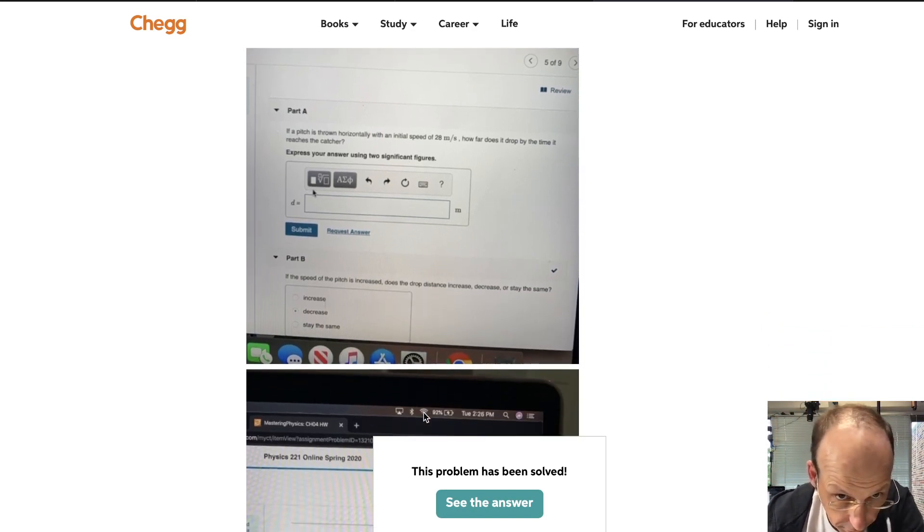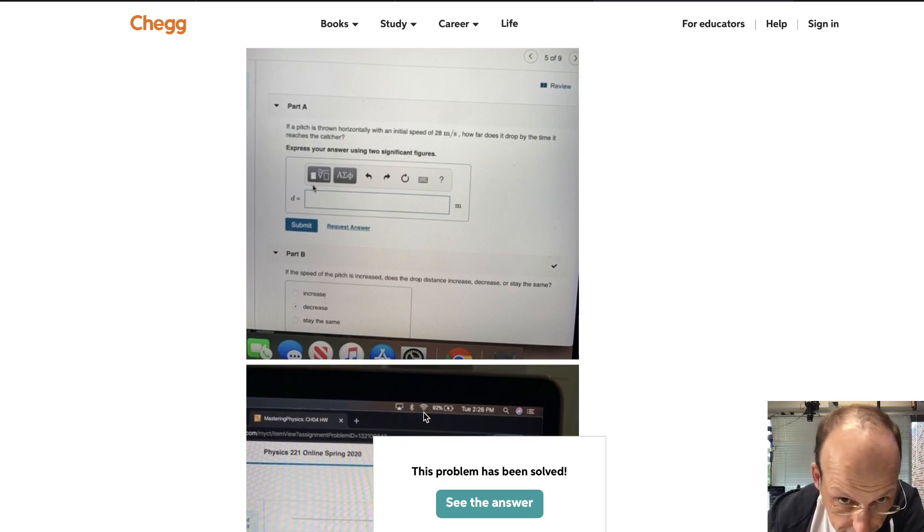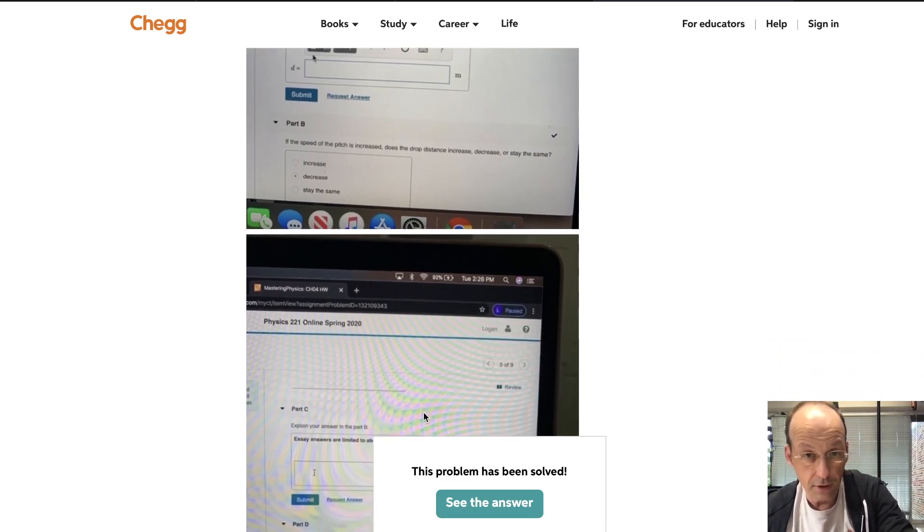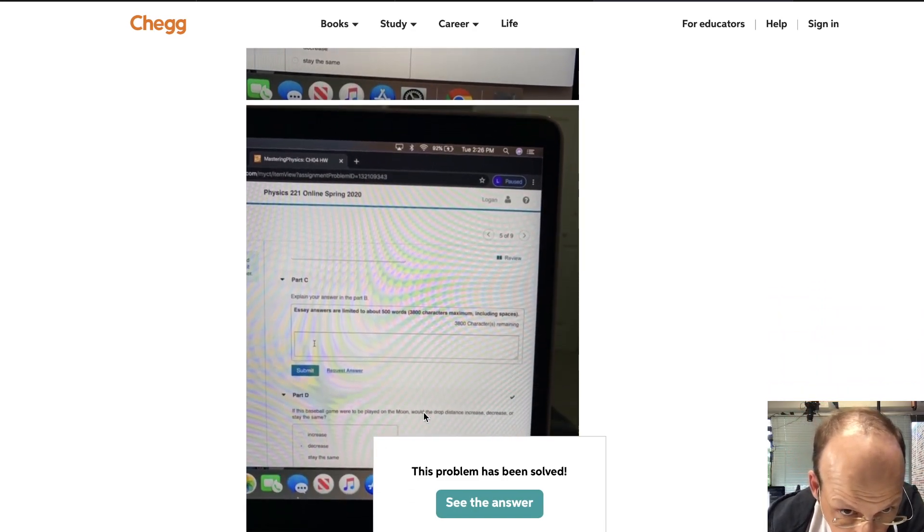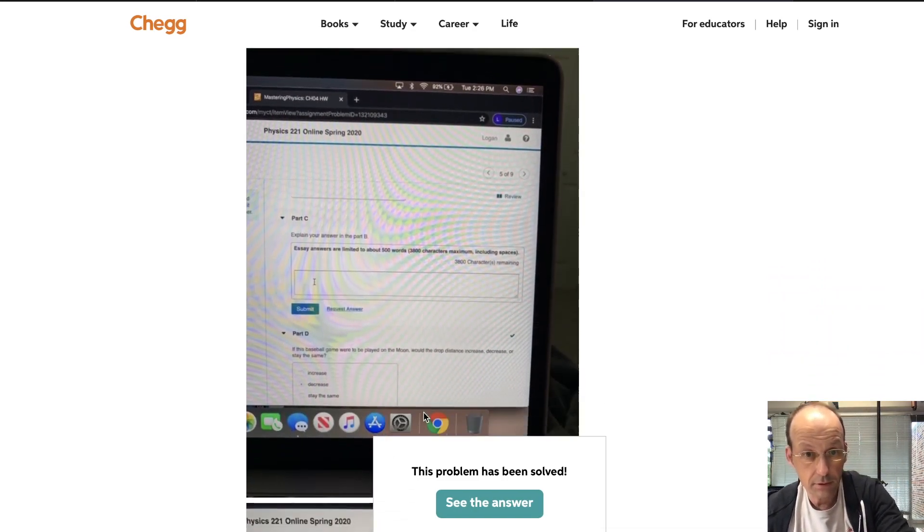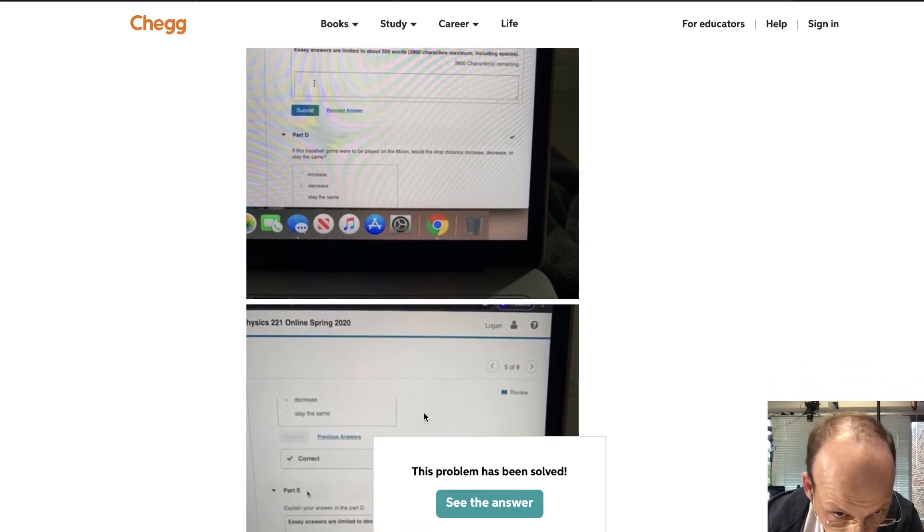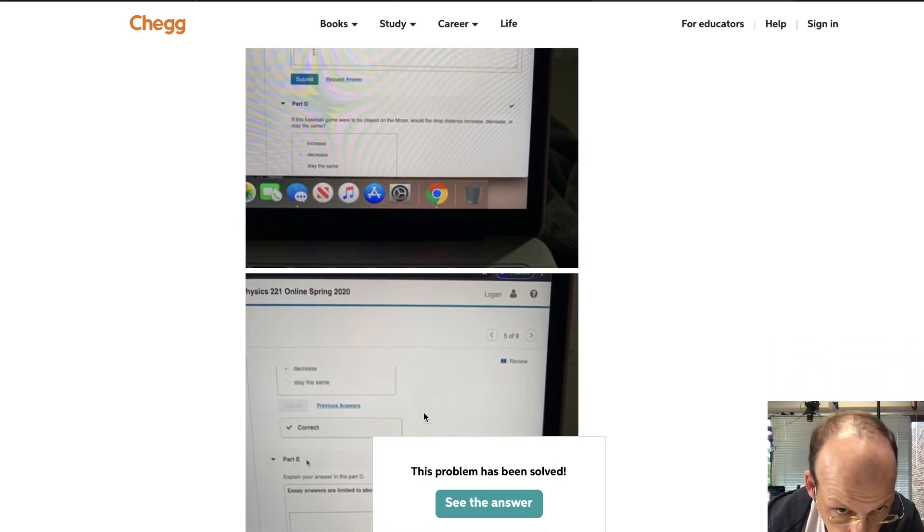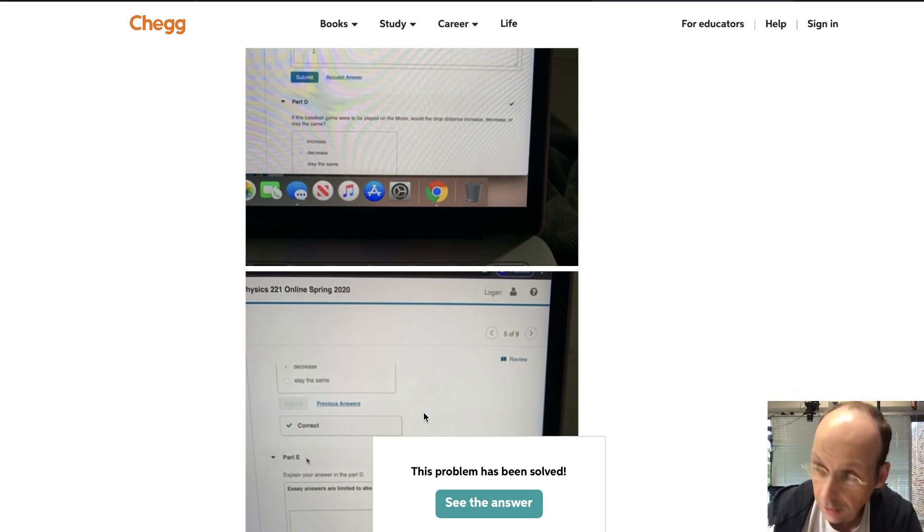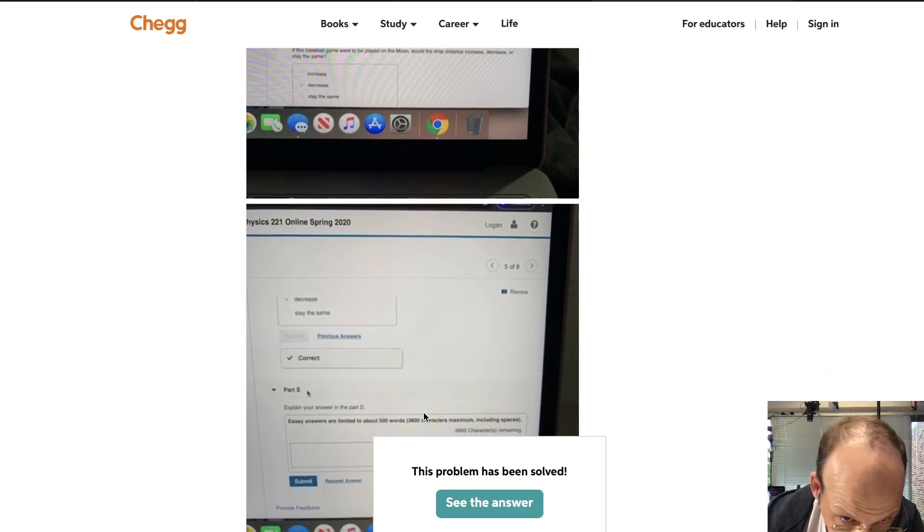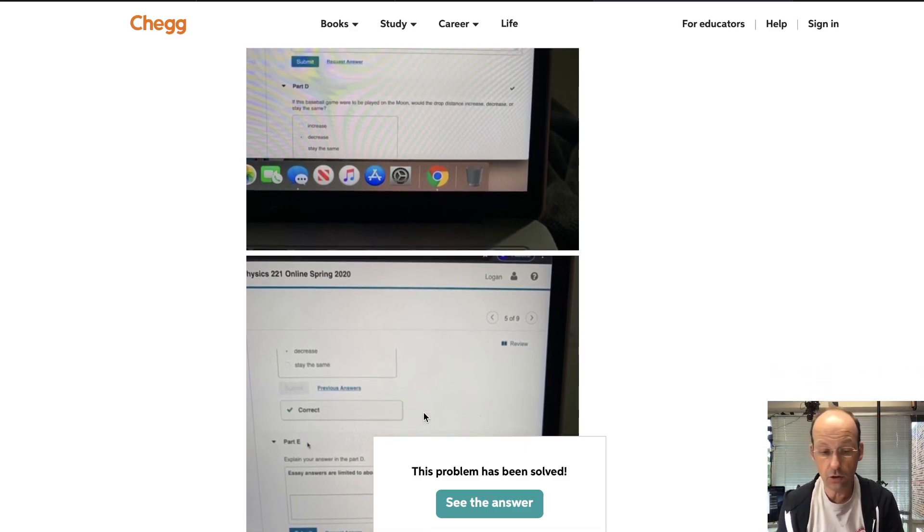How far does it drop by the time it reaches a catcher? So delta Y equals... Part B, I'll just write these down. If the speed of the pitch is increased does the drop distance increase, decrease, or stay the same? Explain your answer. Online spring 2020.